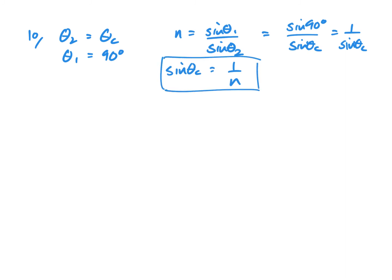Using the idea that the angle in the medium, so theta 2, is equal to the critical angle when the angle in air is equal to 90 degrees, then we can use our formula to derive a new formula for the critical angle. So n is sin theta 1 over sin theta 2. But in this case, that's equal to sin 90 over sin theta c. Sin 90 is 1. And rearranging, we get sin theta c equals 1 over n. That's our formula for the critical angle.